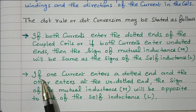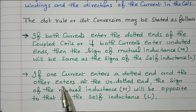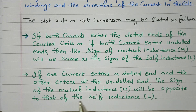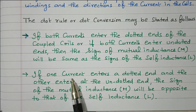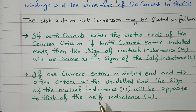Second case: if one current enters a dotted end and the other current enters the undotted end, then the sign of mutual inductance will be opposed to that of self inductance. If both are different — one current enters dotted and one enters undotted — then self inductance and mutual inductance are opposing each other. Based on that, we will see the two different cases.